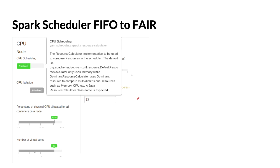Spark's scheduler is FIFO by default, but you can change it to FAIR for specific scaling needs. Since Spark is lazily evaluated, if you want eager execution for a specific code block at runtime, you can use spark.config.set to switch the scheduler from FIFO to FAIR for that block, then switch it back. This changes the execution behavior just for that code block.